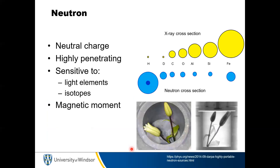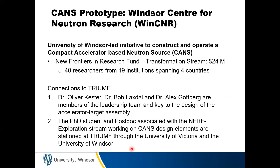What we're working to do is actually build a compact accelerator neutron source prototype at the University of Windsor — the Windsor Centre for Neutron Research, or WinCNR. This isn't an isolated endeavor — it's a University of Windsor-led initiative with a very close connection to TRIUMF in BC. We have 40 researchers from 19 institutions spanning four countries working on this problem together.